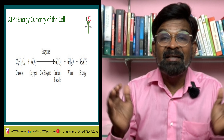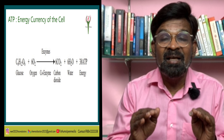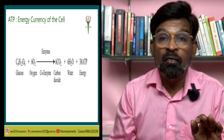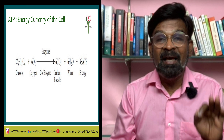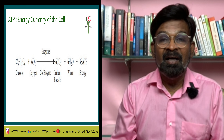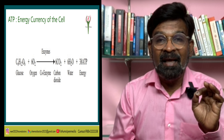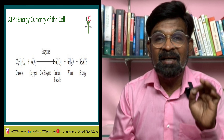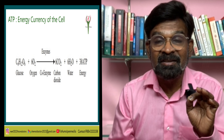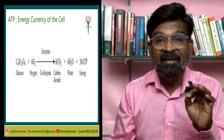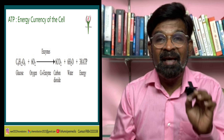During the process of oxidation of food within a cell, all the energy contained in the respiratory substrate is not released free in a single step. Instead, it is released in a series of stepwise reactions controlled by enzymes and is trapped as chemical energy in the form of ATP. ATP acts as the energy currency of the cell.